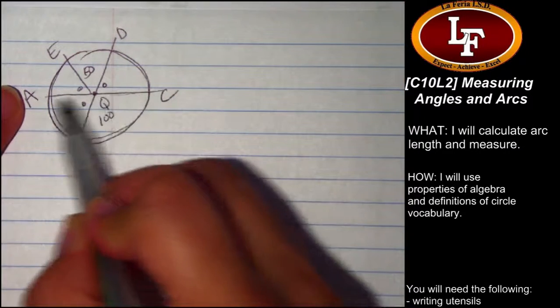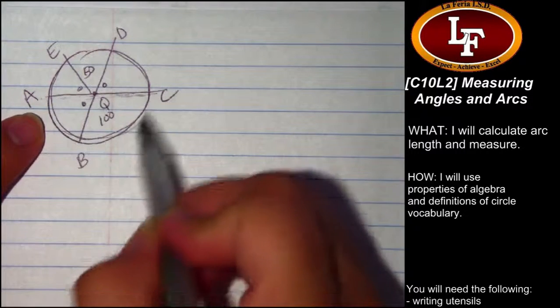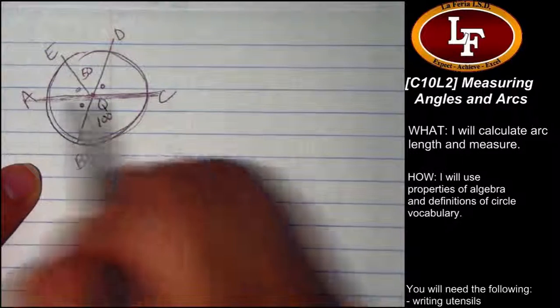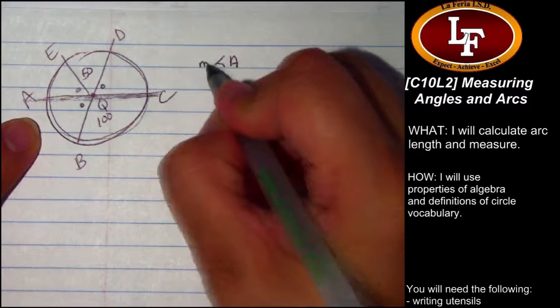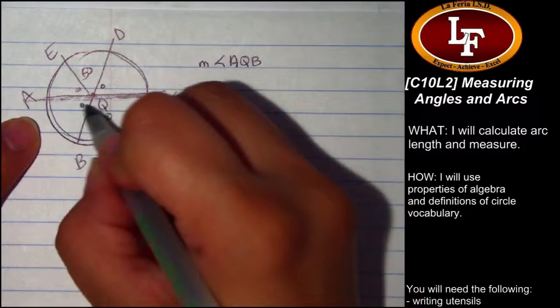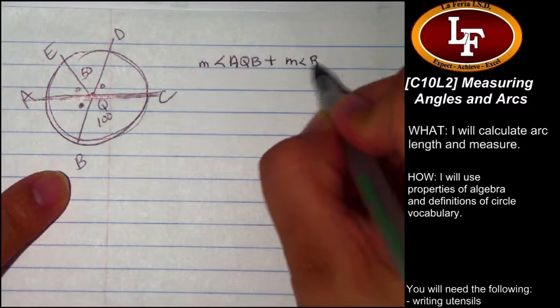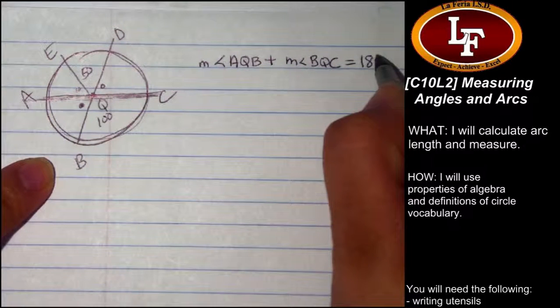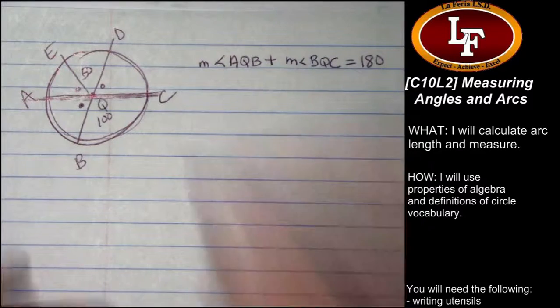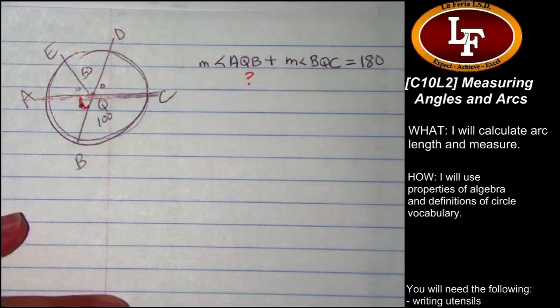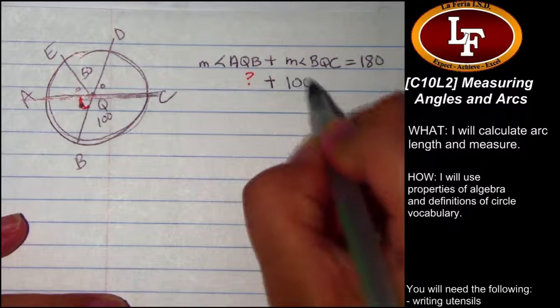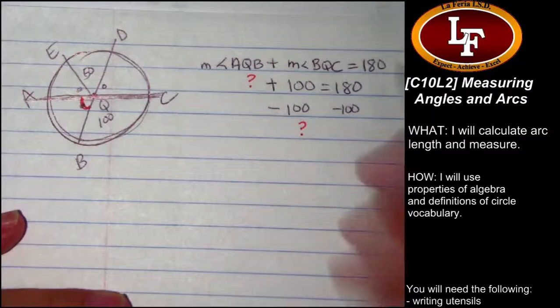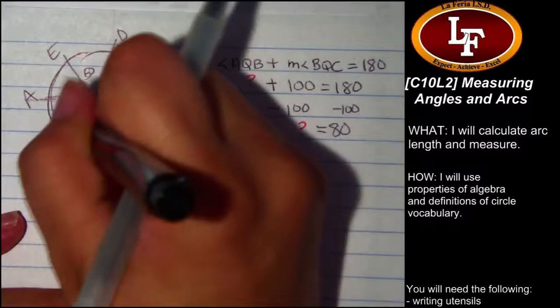Here's something that we know. We have this diameter and this semicircle here. A diameter has a central angle measure of 180. That means angle AQB plus angle BQC need to equal 180 degrees. I know that the measure of angle BQC is 100, so with some algebra, angle AQB is 80.